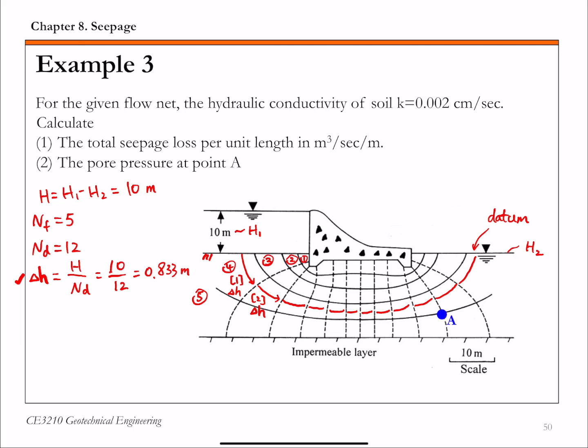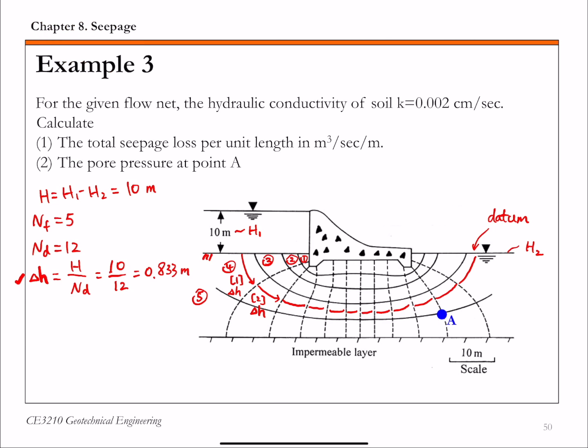And now let's calculate the total seepage loss per unit length and also pore pressure at A. Let me open a blank page here. So first, for part 1, we're going to calculate this small q here. So for this flow net, so all the flow net elements